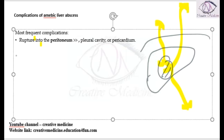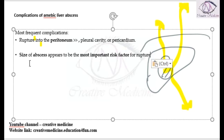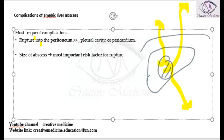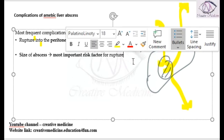The other complications relate to rupture. Why can there be a rupture? One important risk factor for rupture of the abscess is the size of the abscess.